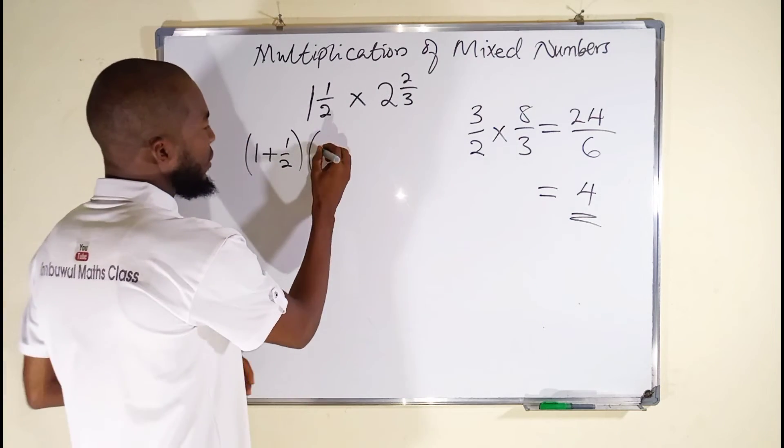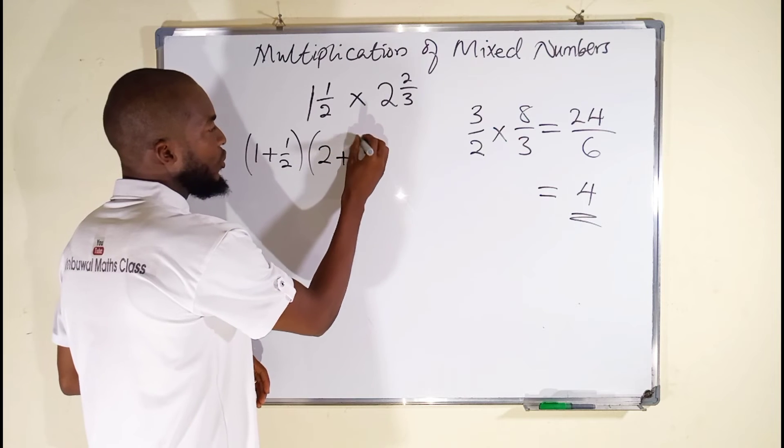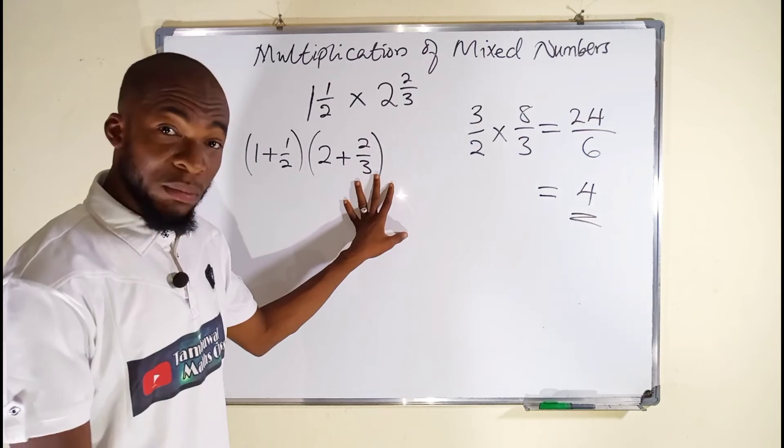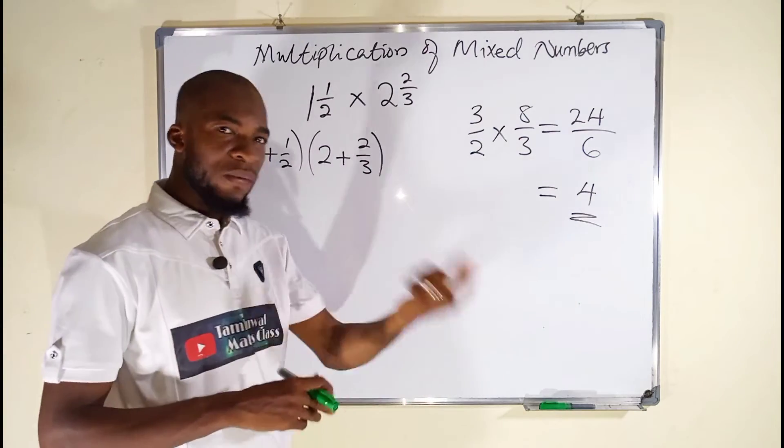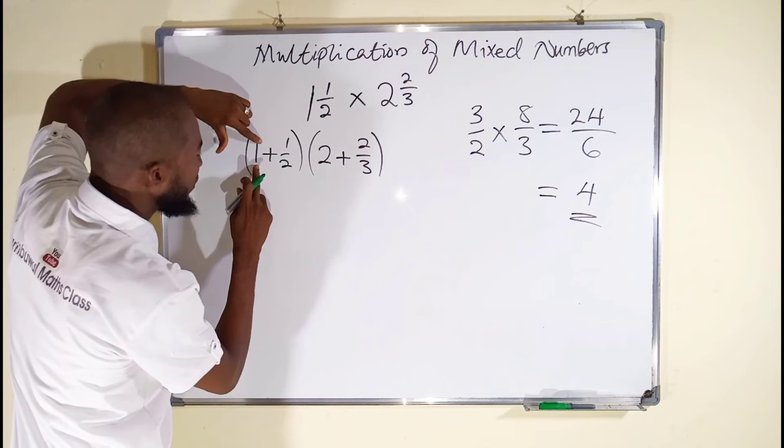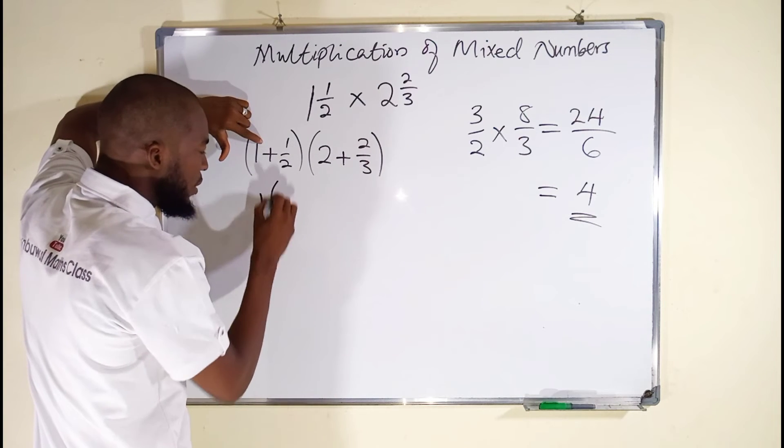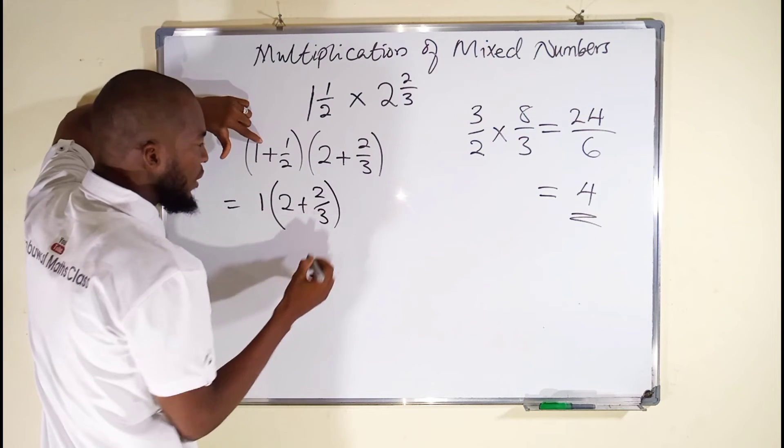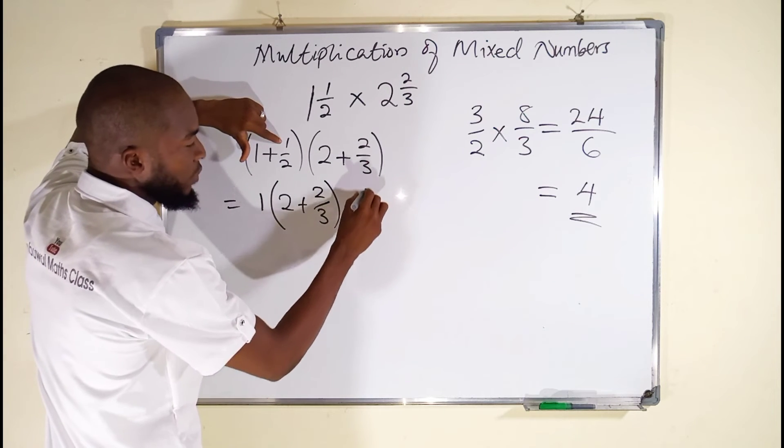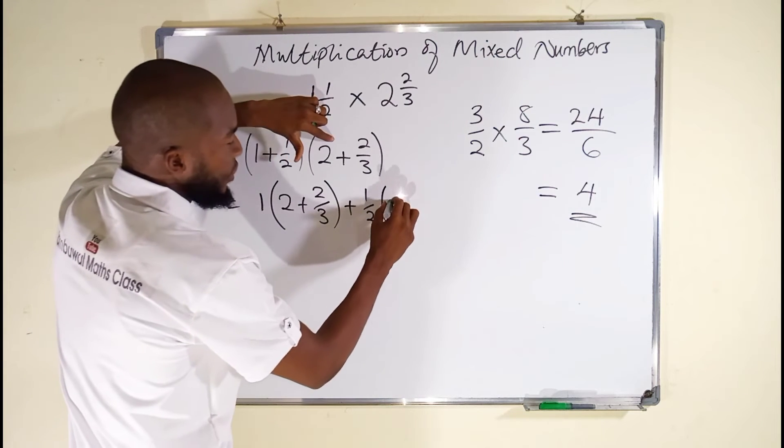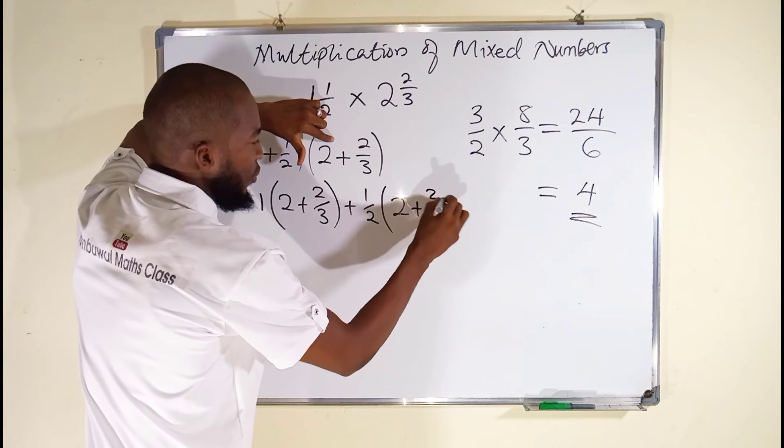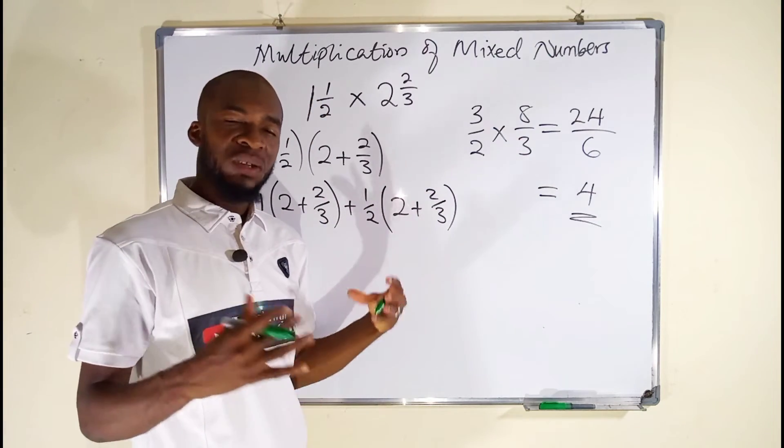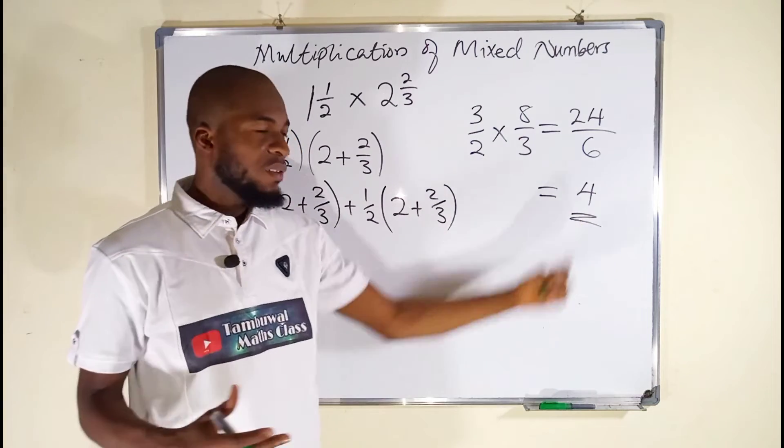So now we want to distribute. We take the first one in parentheses, 1 plus 1 over 2, so we multiply it into the other parentheses: 1 into 2 plus 2 over 3, and we take the second one, plus 1 over 2, and distribute it over 2 plus 2 over 3.